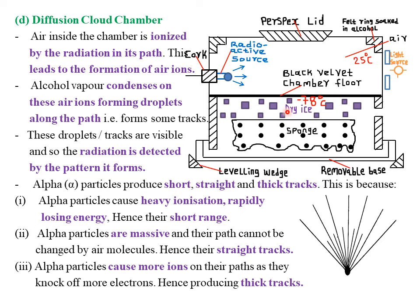The first component of the upper compartment is the radioactive source. Its function is simply to produce the radiations — that is the alpha particle, the beta particle, and the gamma rays. The upper compartment usually consists of air at room temperature. When radiations emanating from the radioactive source come in contact with air molecules, the air gets ionized, producing both positive ions and negative ions.